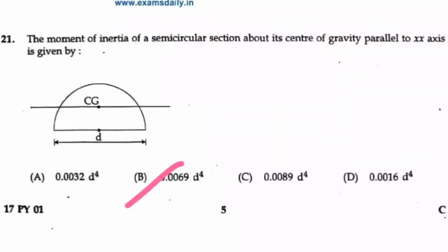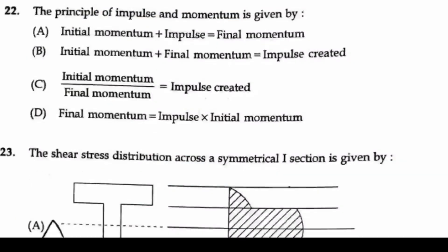Question 22: The principle of impulse and momentum is given by? In all four options, they have given the initial momentum, impulse, and final momentum in various combinations. From this, you can clearly tell that initial momentum plus impulse will give your final momentum. So option A is your right answer.